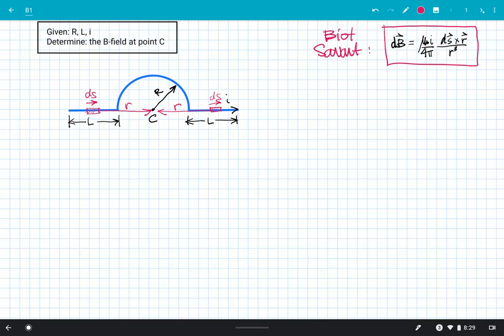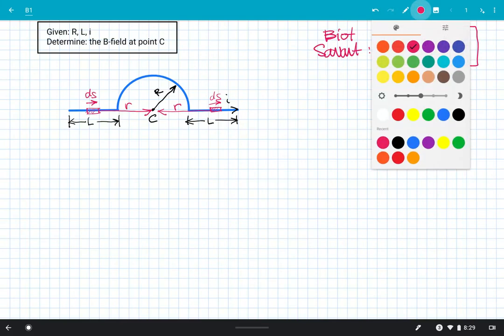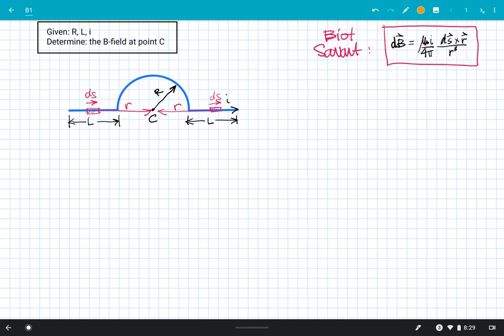Because I have no normal components, my cross product renders zero there as well. So the two straight segments there are going to render me zero cross product.